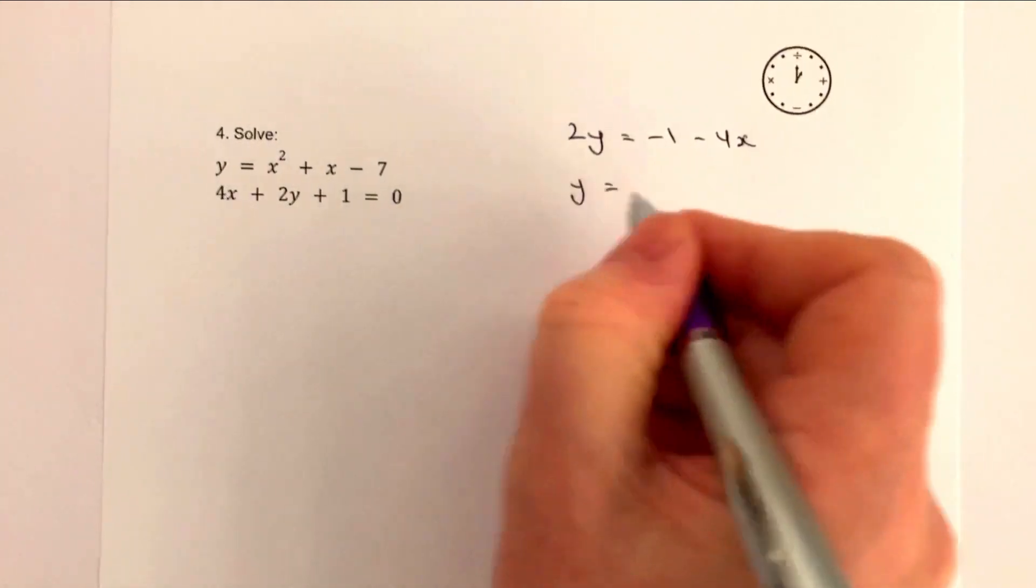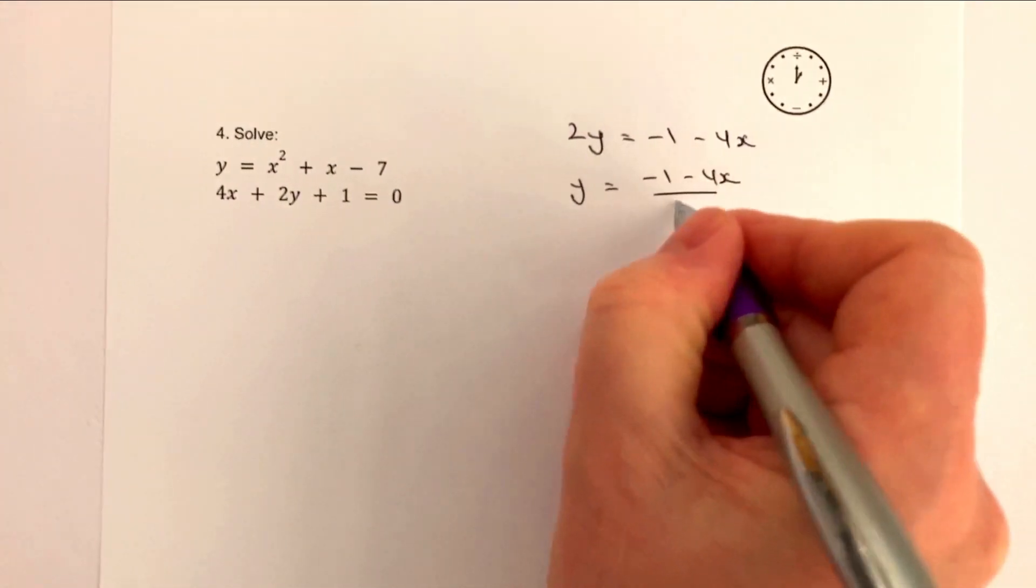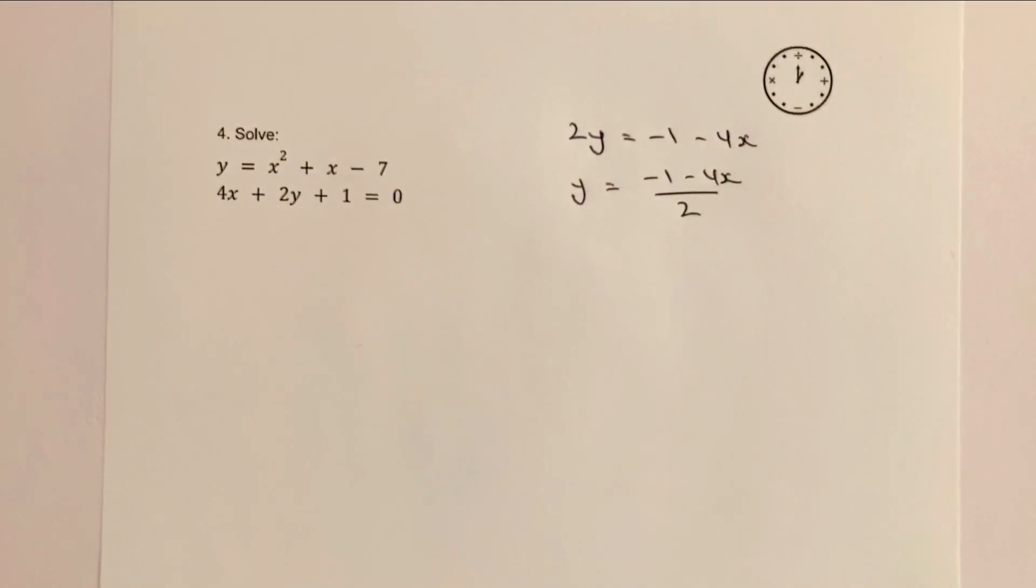And then I'm going to get y equals minus 1 minus 4x all over 2, which is pretty horrible, and we need to use that to substitute into our initial equation here.